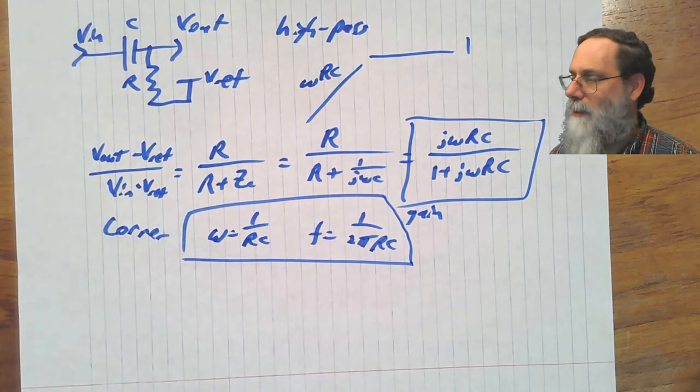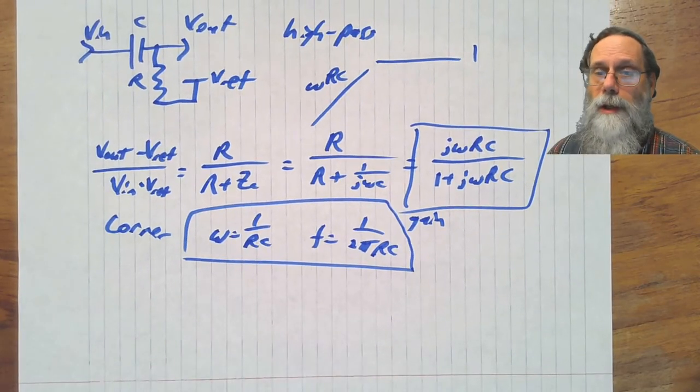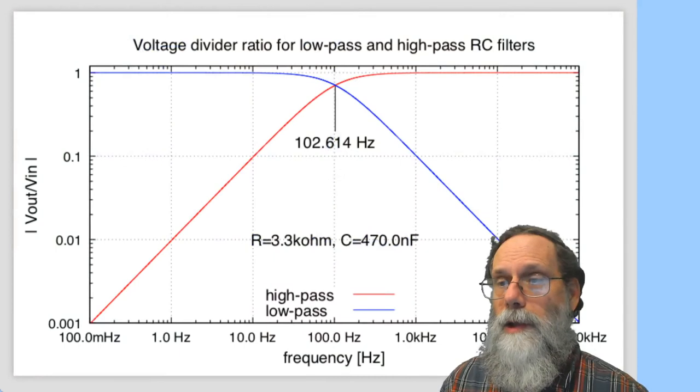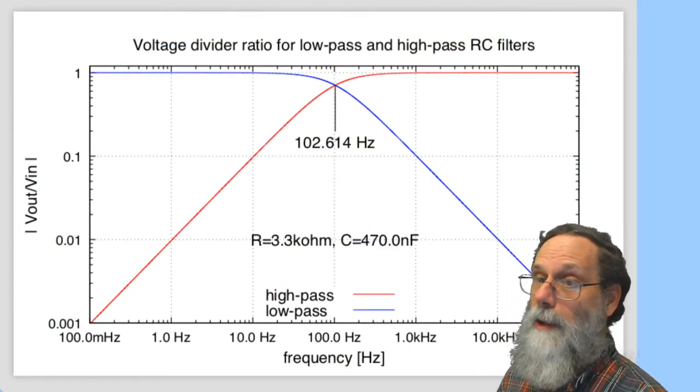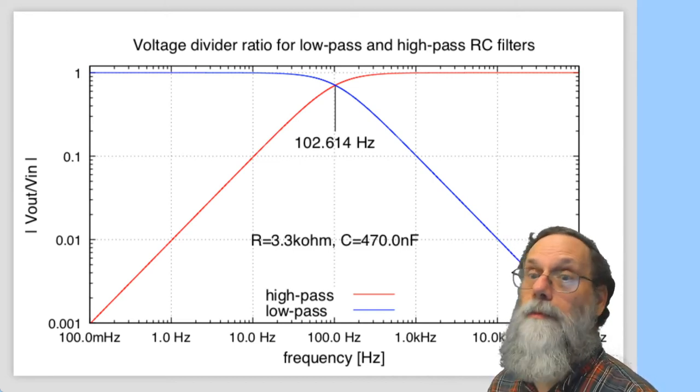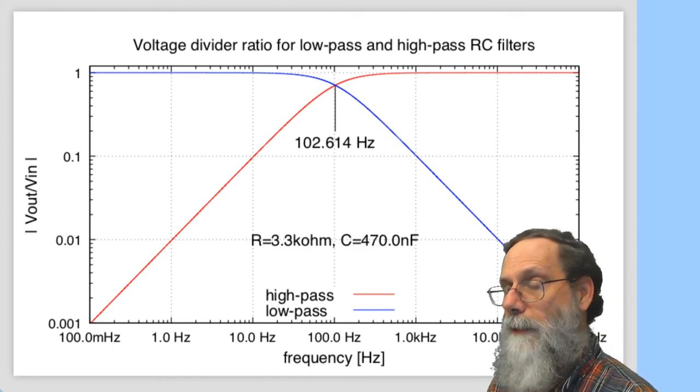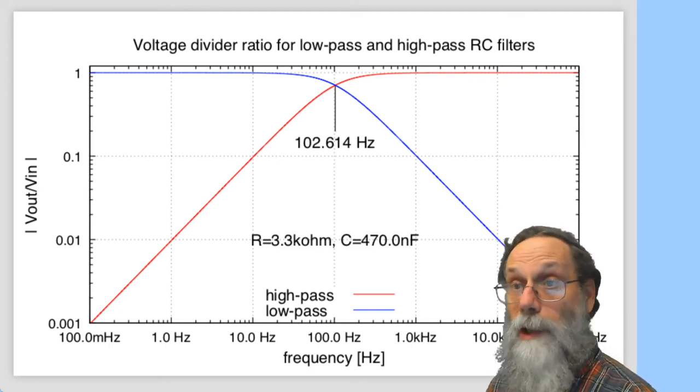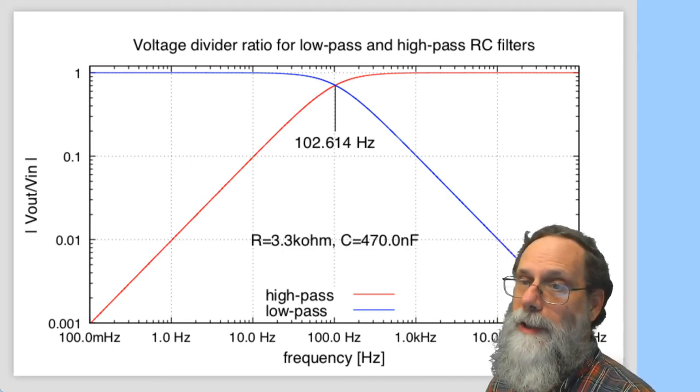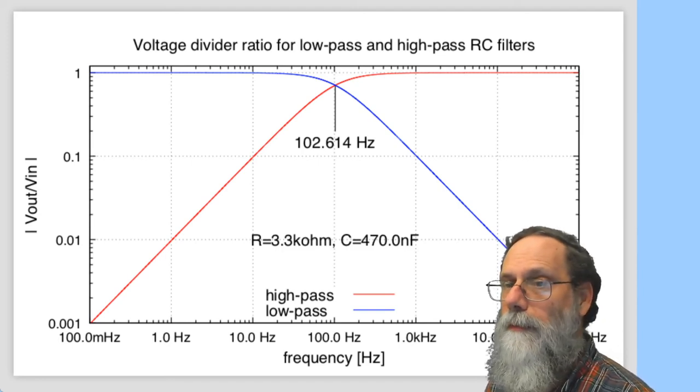All right. So that all looks very nice, but maybe it would be a little more concrete if we try doing this with a specific example. And so what I've done is to use GNUplot to use the voltage divider equations and the formulas for impedance and just plot out two filters. Now these two filters have the same resistor and capacitor: 3.3 kilohm resistor and a 470 nanofarad capacitor. But I've configured one as a low-pass filter and one as a high-pass filter. Now with that particular value of R and C, the corner frequency turns out to be 102.6 hertz.